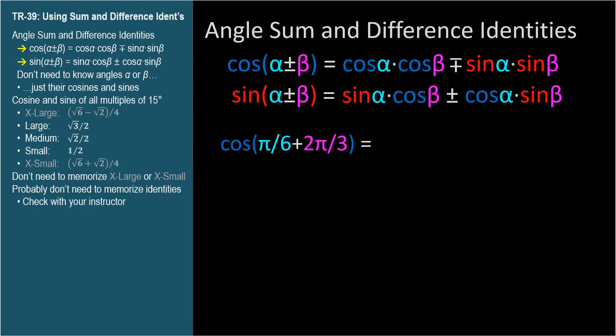Let's find the cosine of π/6 + 2π/3. 2π/3 is 4π/6, so this sum is 5π/6, whose cosine we know is the negative large number, negative √3/2.